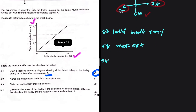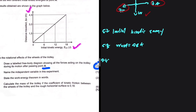Question 5.4: Calculate the mass of the trolley if the coefficient of kinetic friction between the wheels and the rough horizontal surface is 0.18. Since 5.3 defined the work-energy theorem, we will use it here: W_net equals ΔEK. We have the coefficient of kinetic friction, so we can find the frictional force, which is the only force doing work on the object. Normal force and weight do no work, as they are perpendicular to motion (cos 90° and cos 270° equal zero).